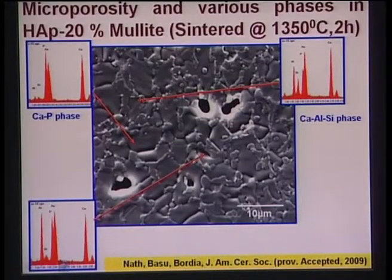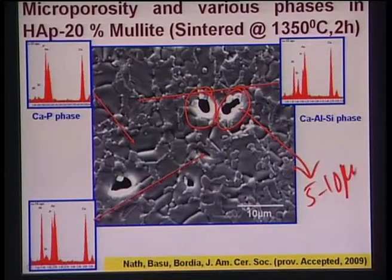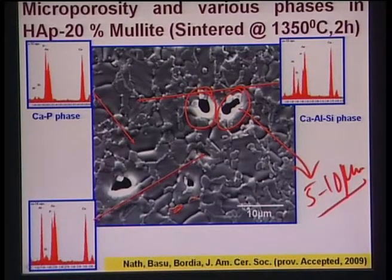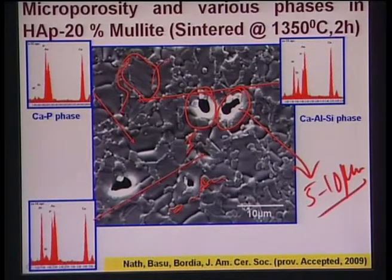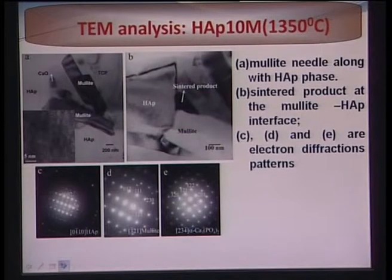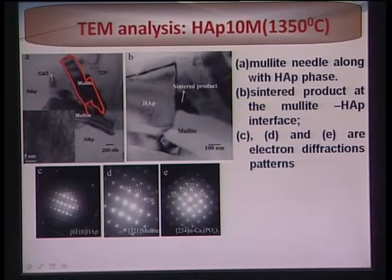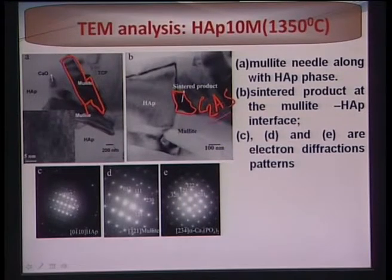Typical SEM images show microporosity of roughly 5–10 microns in the structure. This microporosity is associated with a grain boundary phase, most likely the calcium aluminosilicate (C2AS) phase formed along grain boundaries. TEM analysis shows mullite as needle-like structures dispersed in the microstructure. The sintered reaction product — C2AS (2CaO·Al2O3·SiO2, or calcium aluminosilicate) — is formed at the interface between hydroxyapatite and mullite.